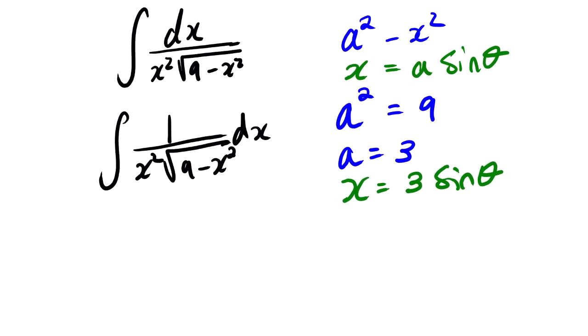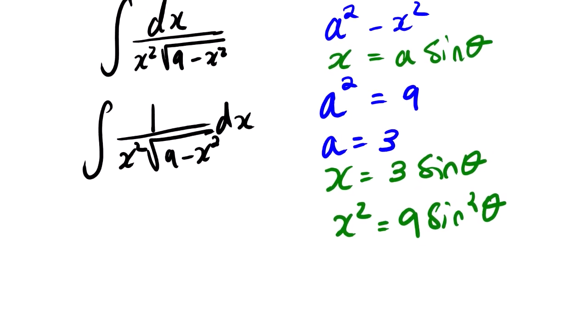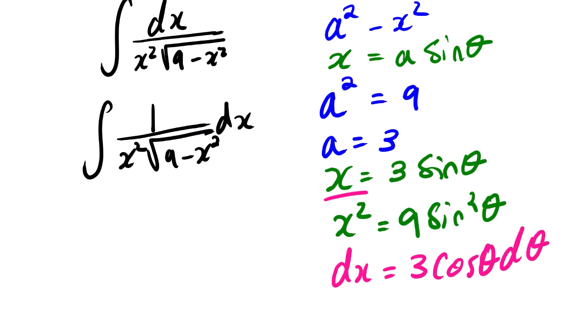We are not done. Our function consists of x squared terms, so we need to also find x squared. We square both sides to get x squared equals 9 sine squared theta. We also need to find the derivative: dx equals 3 cos theta d theta. Now that we have our equations, we can go ahead and substitute.